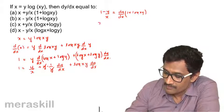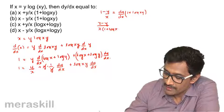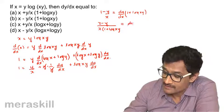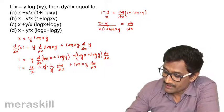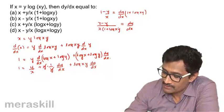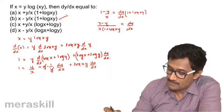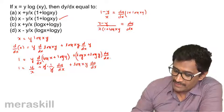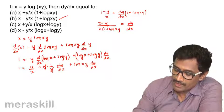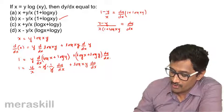So it becomes (x − y)/(x(1 + log xy)) = dy/dx. Hence dy/dx = (x − y)/(x(1 + log xy)), which is option B. We used the product rule and the logarithm property log(xy) = log x + log y throughout.